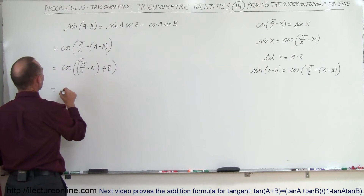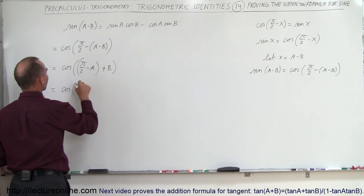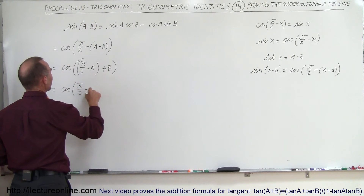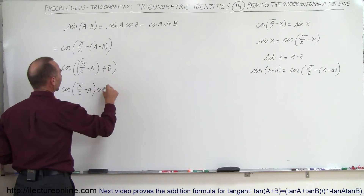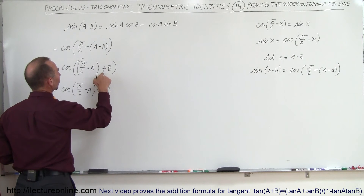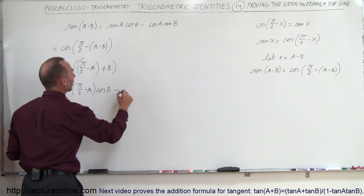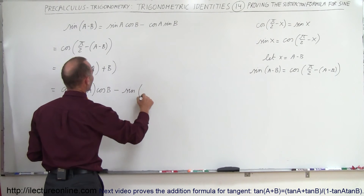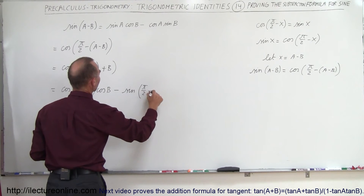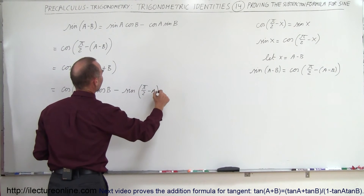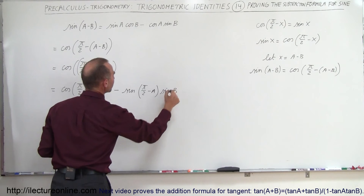This then becomes equal to the cosine of the first angle, pi over 2 minus a, times the cosine of the second angle b. And since there's a plus here, this becomes minus the sine of the first angle, which is pi over 2 minus a, times the sine of the second angle b.